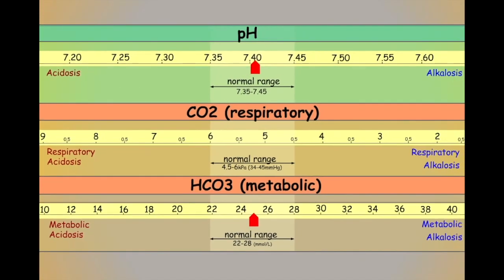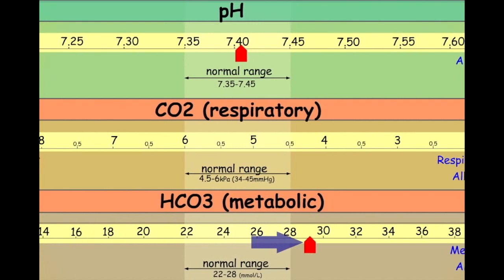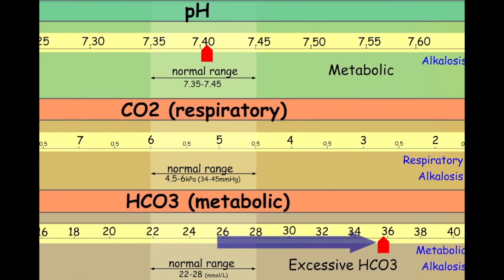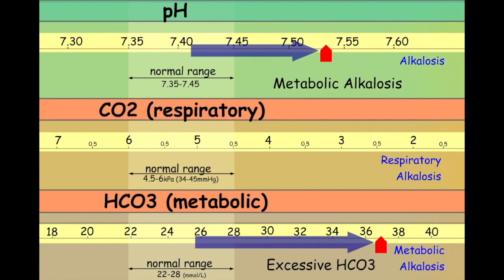A metabolic alkalosis can occur when there is too much bicarbonate in the blood compared to the amount of protons, the amount of acid being produced by the body. The acid will be buffered at a faster rate than it is being produced and our pH will be pushed in an alkalotic direction. This would be referred to as a metabolic alkalosis.